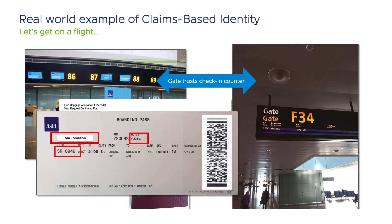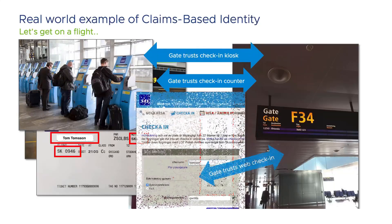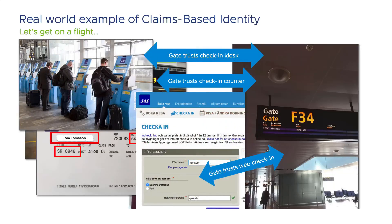The gate trusts the check-in counter. Therefore, it accepts what the boarding pass claims — for example, my name, my frequent flyer status, which plane I'm supposed to board. The boarding pass is signed, so the gate knows the claim hasn't been tampered with. And in today's world of flying, the gate trusts multiple different identity providers — the check-in kiosk, and many times also web check-in.